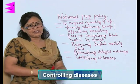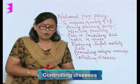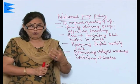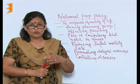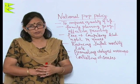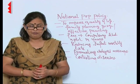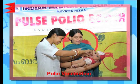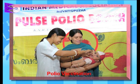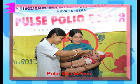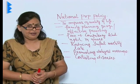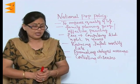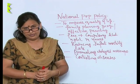Controlling diseases is also a key objective. All kinds of diseases — waterborne or otherwise, such as smallpox, chicken pox, and cholera — have to be controlled through various vaccination programs. The polio vaccination program, for instance, has vaccinated most children in the country against polio, and it is believed to be nearly eradicated in India, which comes under the National Population Policy.